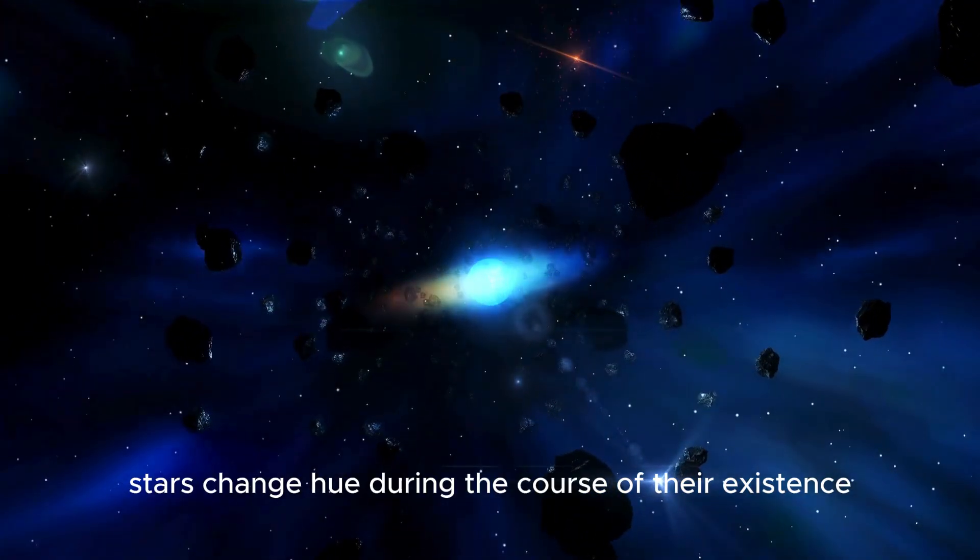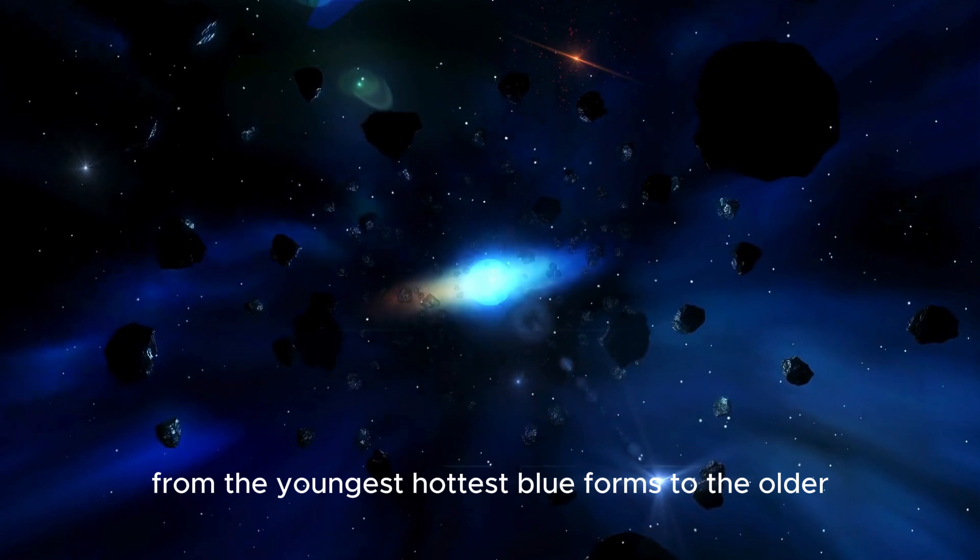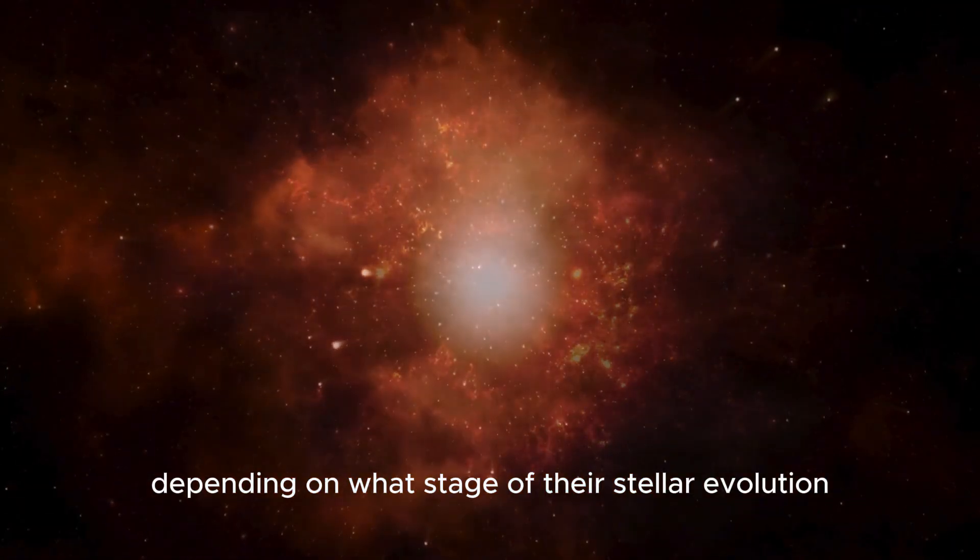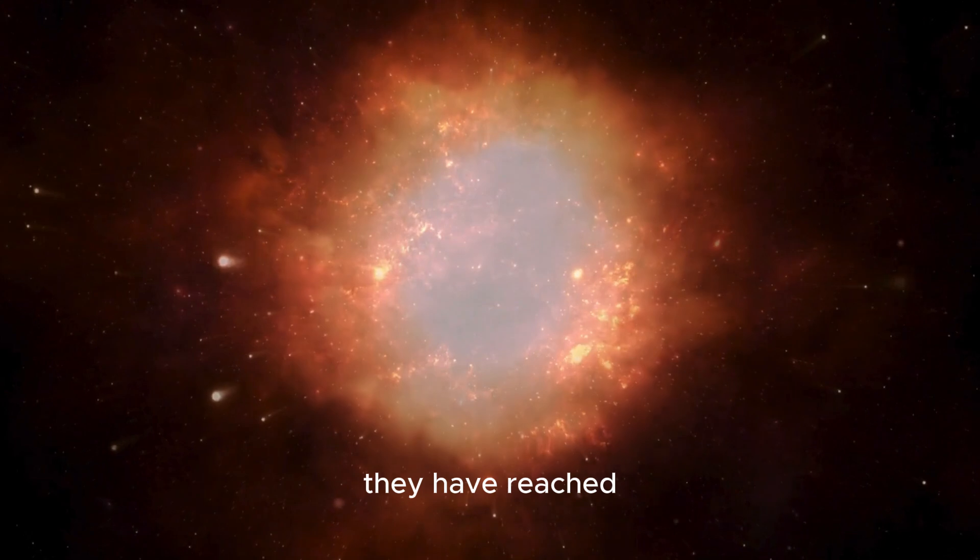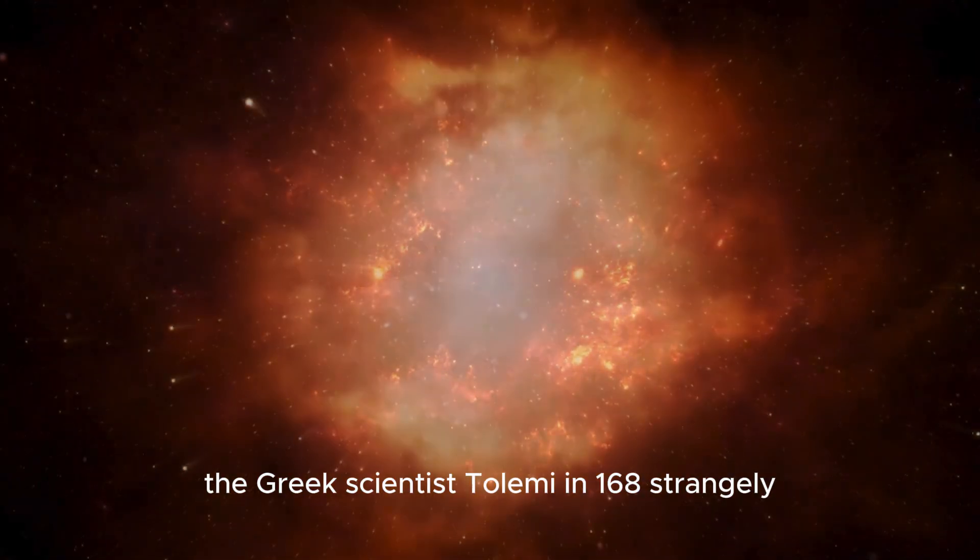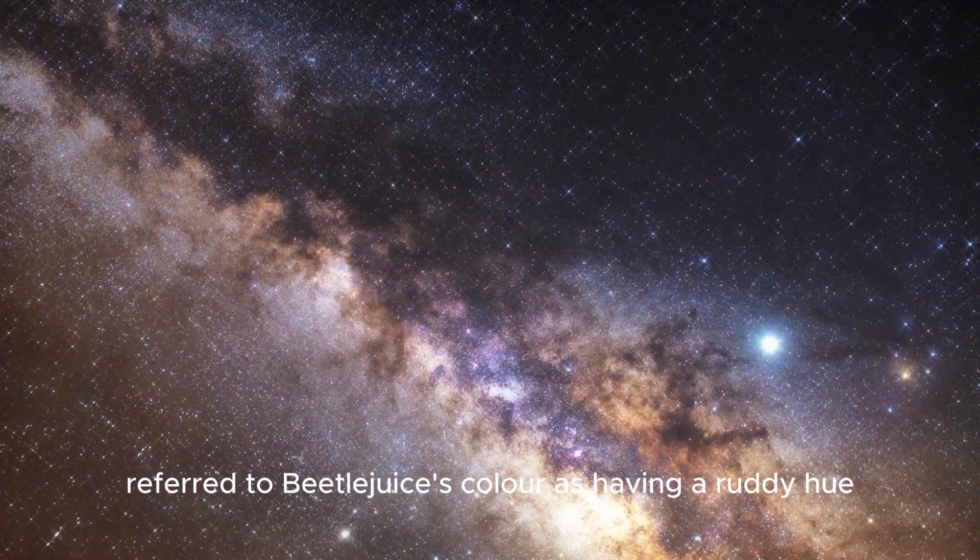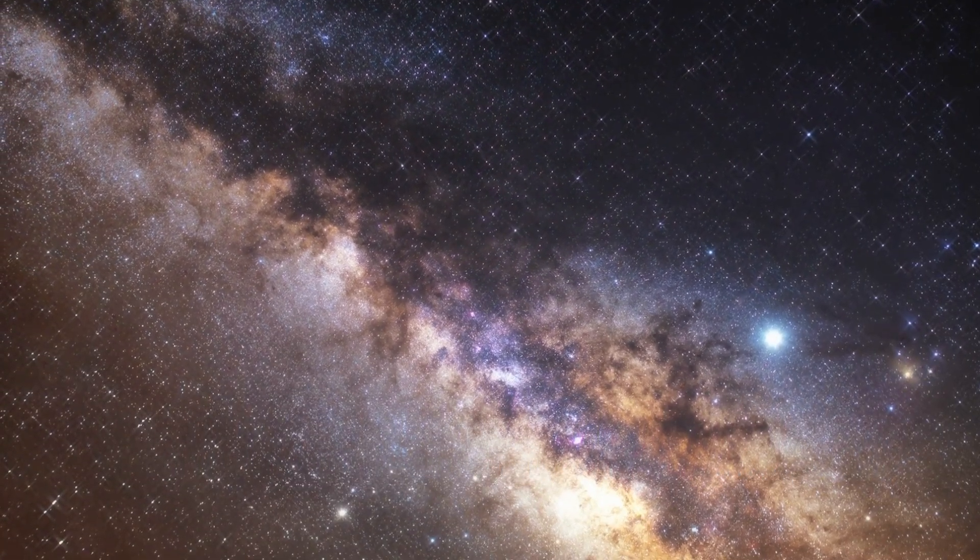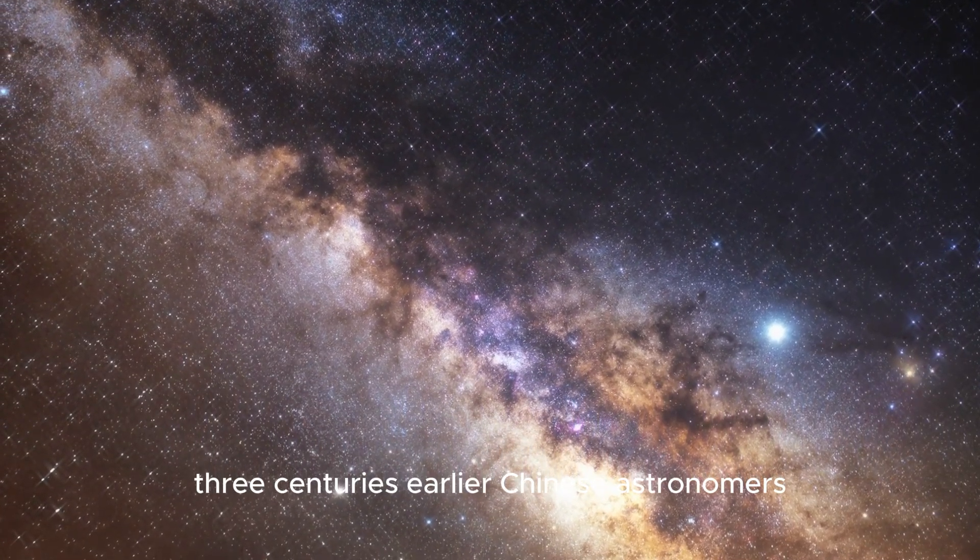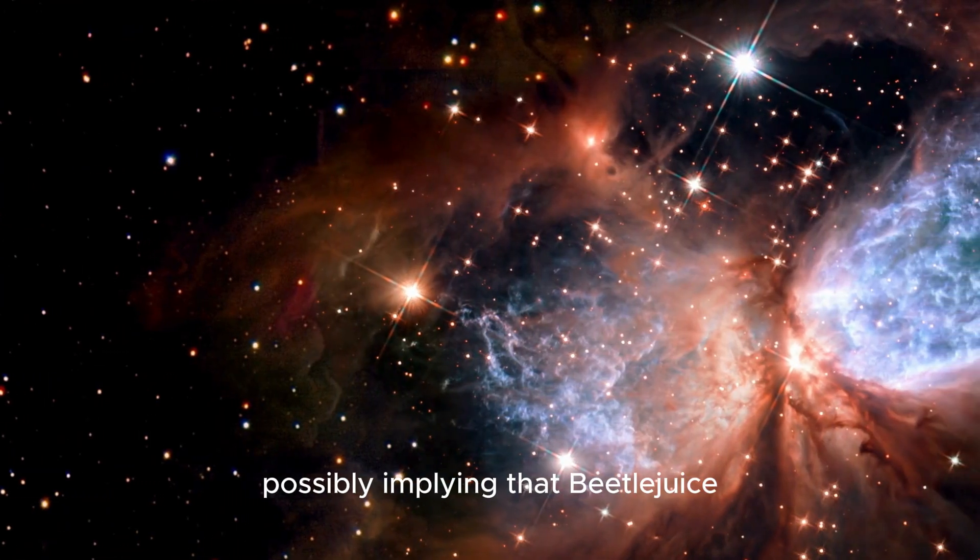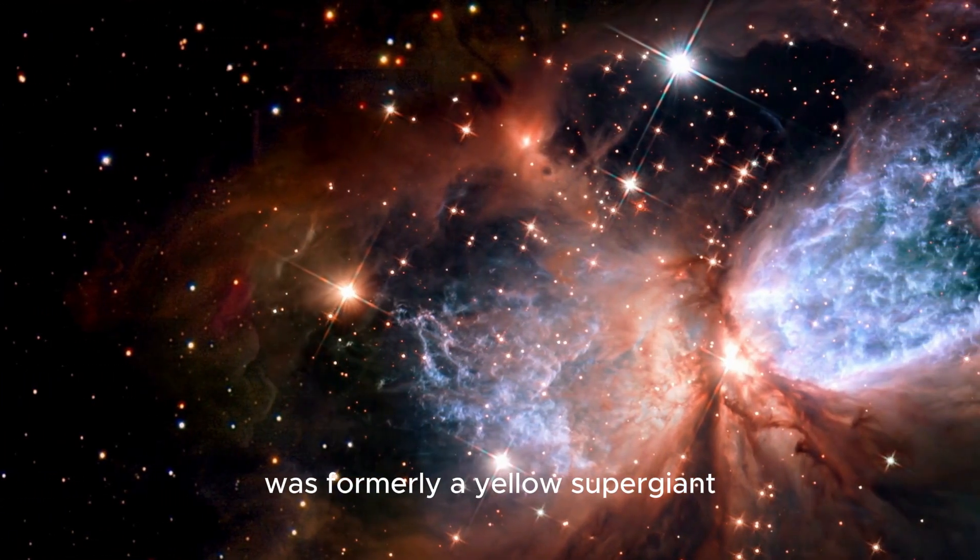Stars change hue during the course of their existence, from the youngest hottest blue forms to the older cooler red varieties, depending on what stage of their stellar evolution they have reached. The Greek scientist Ptolemy in 168 AD referred to Betelgeuse's color as having a ruddy hue. Three centuries earlier, Chinese astronomers had characterized the star as having a yellow appearance, possibly implying that Betelgeuse was formerly a yellow supergiant.